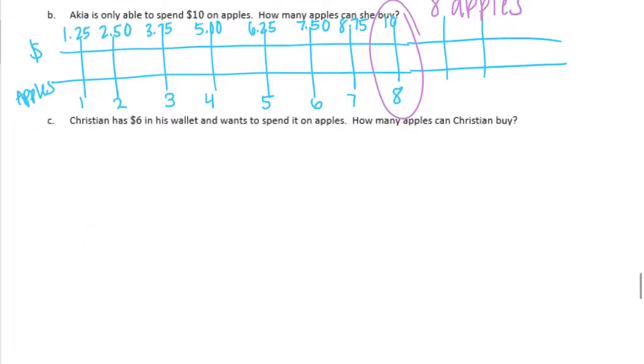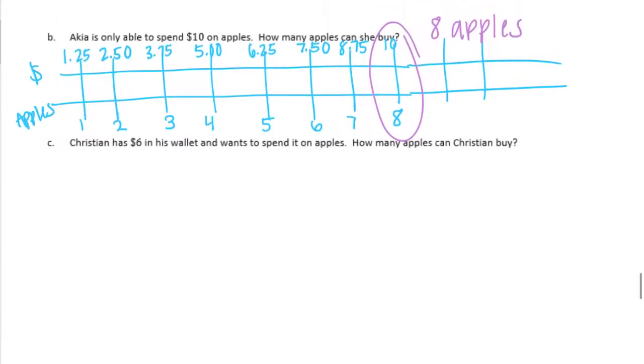Christian has $6.00 in his wallet and wants to spend it on apples. How many apples can Christian buy? So he has $6.00. Let's just look up to our chart here and find $6.00. So $6.00 is about right there, which means he doesn't have enough to buy 5 apples. So he could only buy 4 apples. So he can buy 4 apples for $5.00.